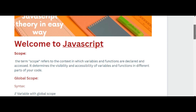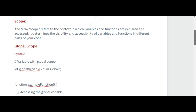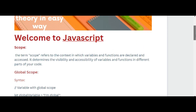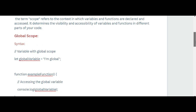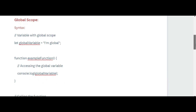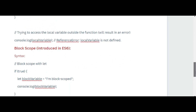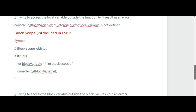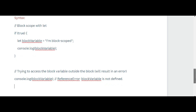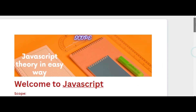So this is all about scope — I explained global scope, local scope, and block scope, which was introduced in ES6. That's all for this video, see you in the next one.